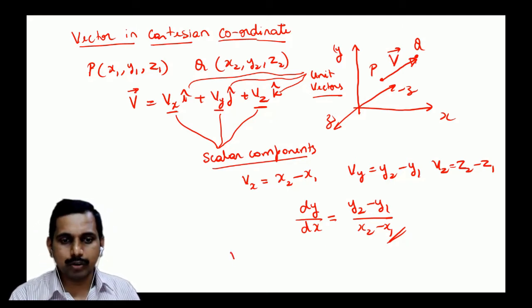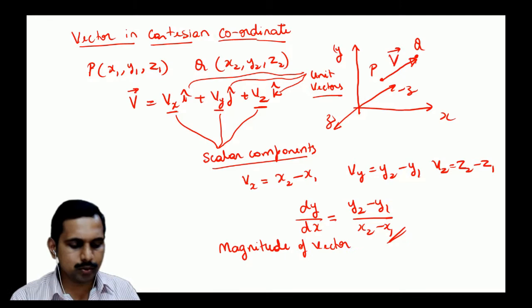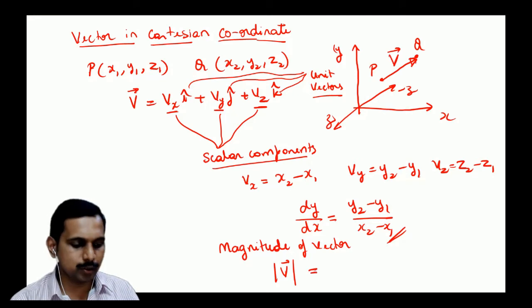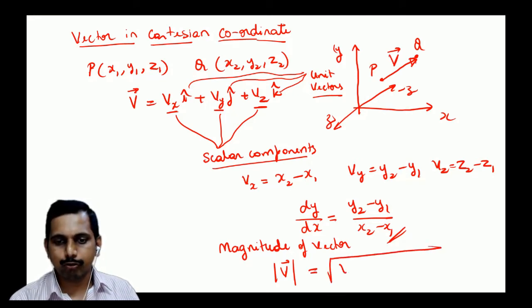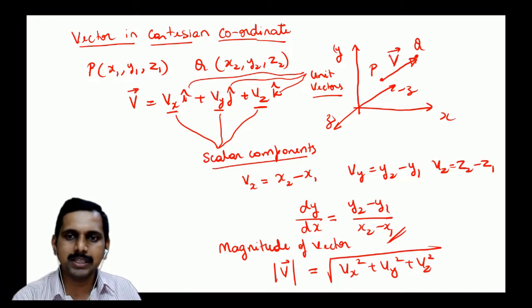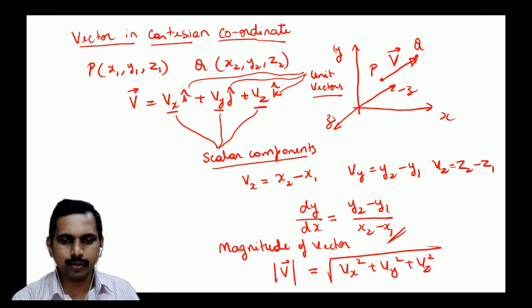The magnitude of vector v is the square root of vx² plus vy² plus vz². This tells you how long or how big the vector is. The magnitude of a vector is a scalar — keep that in mind.